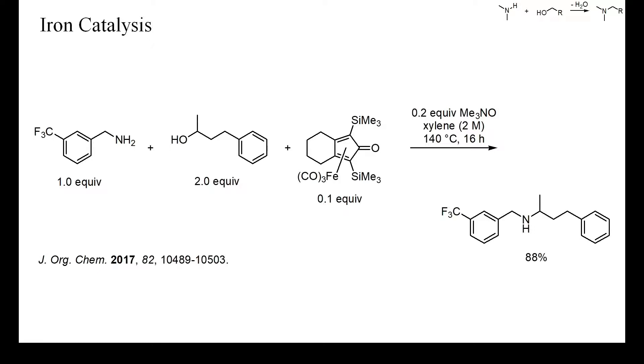Here, the starting materials were more demanding: a benzylic amine, which can be readily dehydrogenated, and a secondary aliphatic alcohol. With 10% of an iron complex, however, a high yield of alkylated benzylic amine resulted.